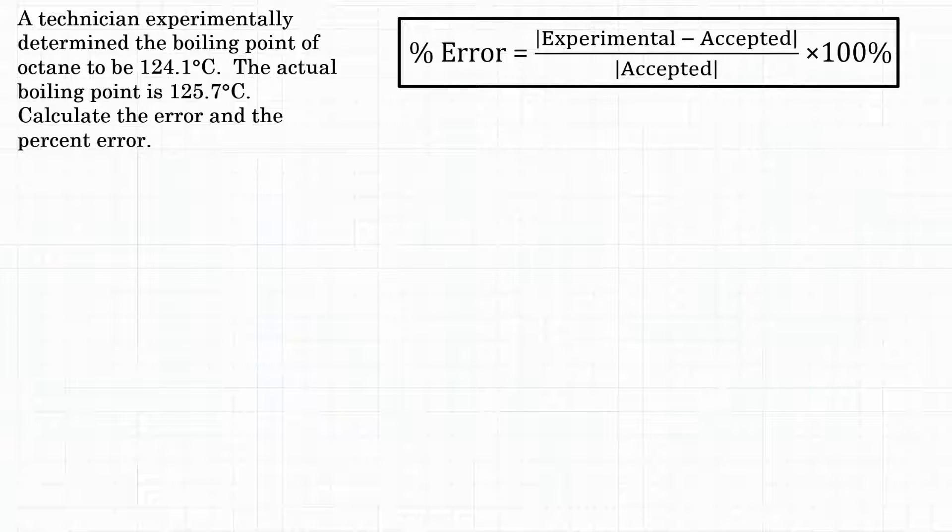All right everyone, the problem says a technician experimentally determined the boiling point of octane to be 124.1 degrees Celsius. The actual boiling point is 125.7 degrees Celsius. Calculate the error and the percent error.